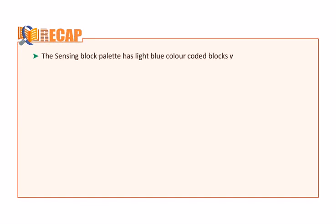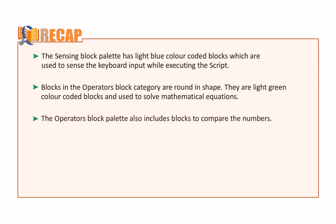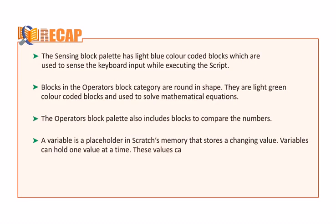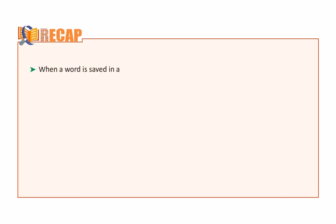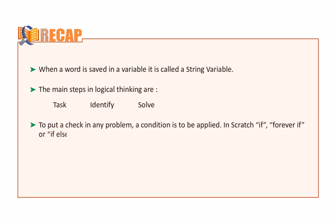Students, let's go through the recap of this chapter. The Sensing block palette has light blue color coded blocks which are used to sense the keyboard input while executing the script. Blocks in the Operator's block category are round in shape — they are light green color coded blocks used to solve mathematical equations. The Operator's block palette also includes blocks to compare numbers. A variable is a placeholder in Scratch memory that stores a changing value; variables can hold one value at a time. These values can be numbers or strings. The data block is used to create variables in a project. When a word is saved in a variable, it is called a string variable. The main steps in logical thinking are Task, Identify, and Solve. To put a check in any program, a condition is to be applied. In Scratch, If, Forever If, or If Else are the conditional blocks present in the control block category.